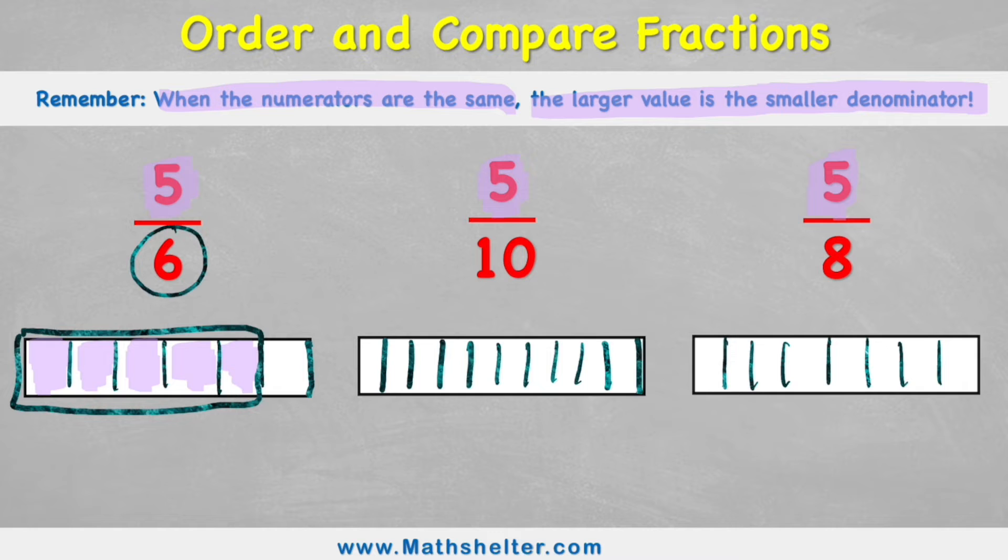Now, in the second one, I have five tenths. So although I still have five pieces, I have five tenths. Two, three, four, five. So because my chocolate bar has been split into more pieces, ten is more than six, each piece is actually quite small.